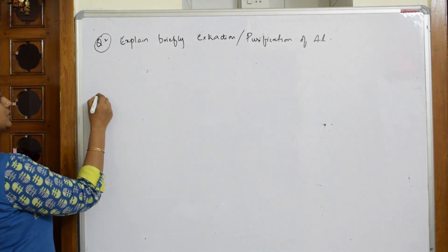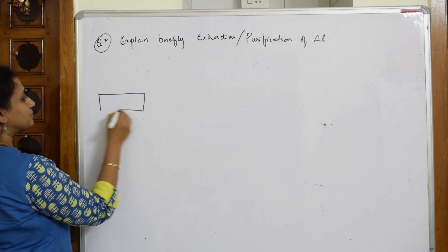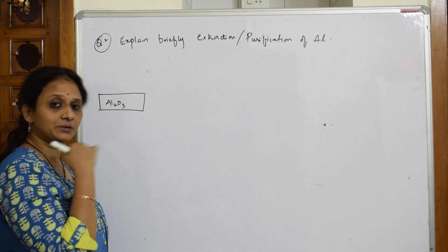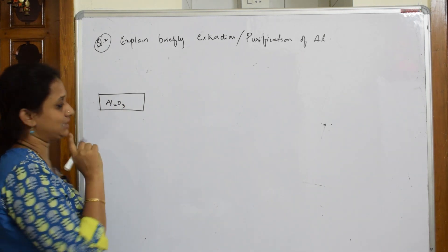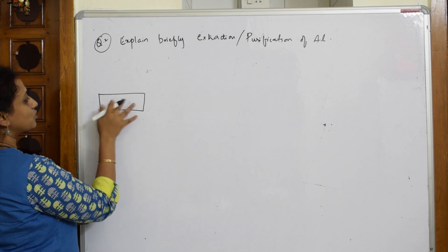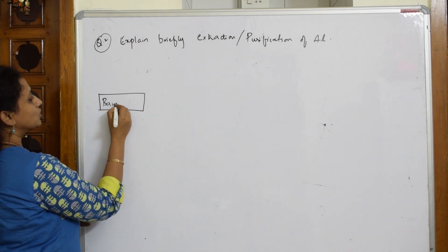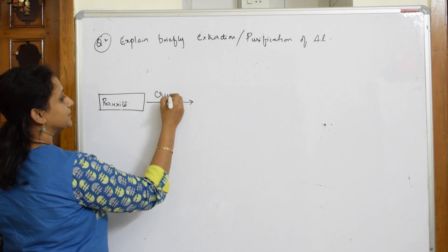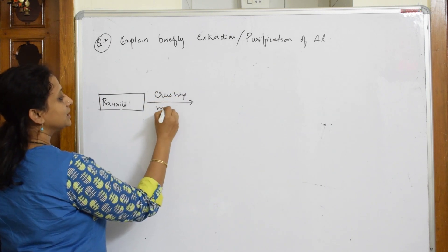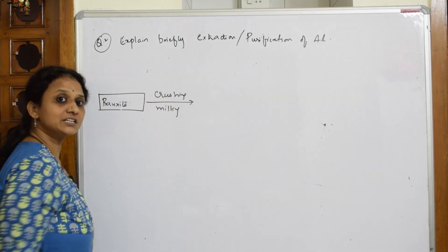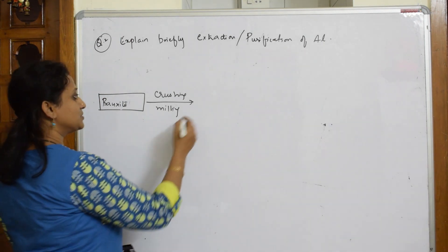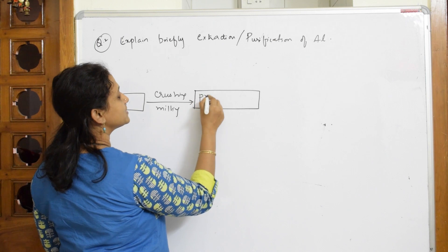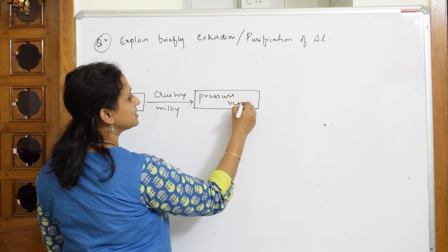In Bayer's process, first what do we do? We are going to take that particular bauxite, Al2O3, which is obtained from your leaching or cementing. So I am going to write bauxite. This bauxite is first sent for crushing or milling. Once it is sent for crushing and milling, this whole thing is sent into a vessel called pressure vessel. This whole process occurs in a pressure vessel.